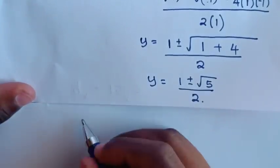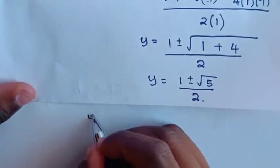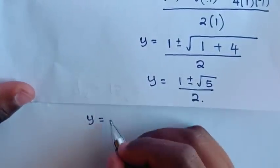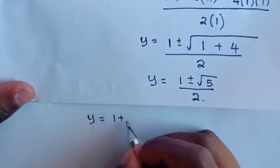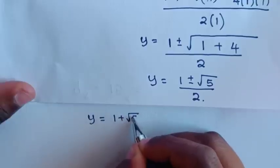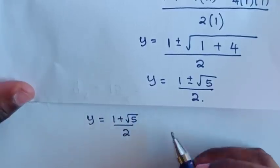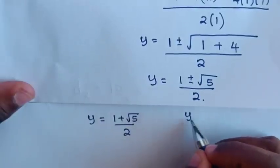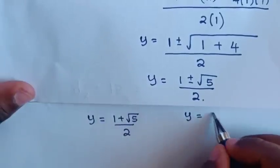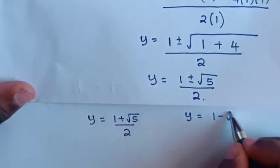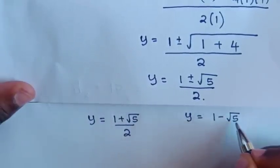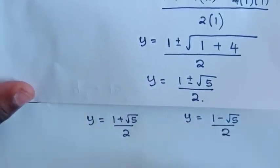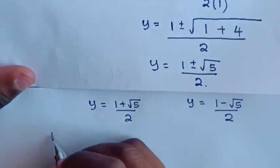Then y is equal to 1 plus or minus square root of 5, over 2. We have two solutions: y equals (1 plus square root of 5) over 2, and y equals (1 minus square root of 5) over 2.